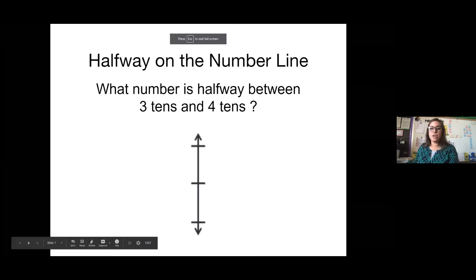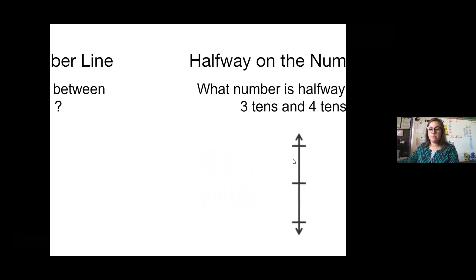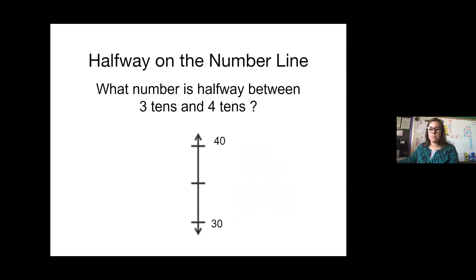Okay, let's take a look at these vertical number lines. I want to know what number is halfway between three tens and four tens. So go ahead, pause the video, draw the number line, and label it with three tens down here, four tens up here. And then what number goes in between is halfway. So we've got three tens, we've got four tens. And then what number is right in between 30 and 40? 35.